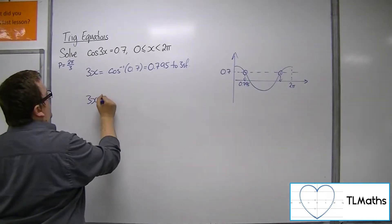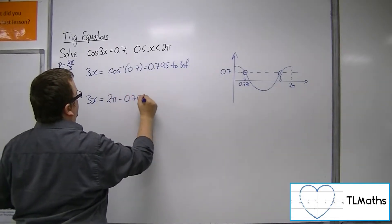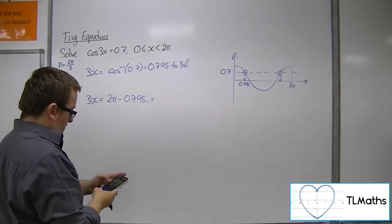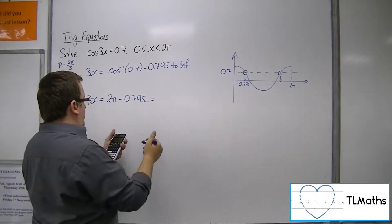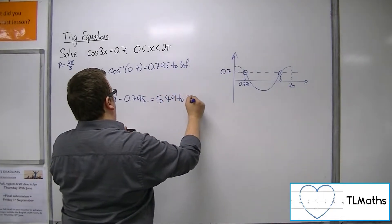The second I can find by subtracting 0.795 from 2π, which is 5.49 to 3 significant figures.